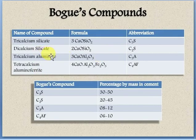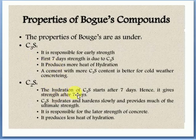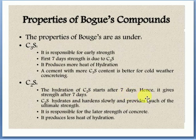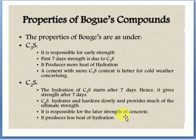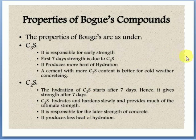C2S — Dicalcium Silicate: hydration of C2S starts after seven days. Hence it gives strength after seven days. C2S hydrates and hardens slowly and provides much of the ultimate strength. Very important: ultimate (later) strength comes from C2S. It is responsible for the later strength of concrete, and it produces less heat of hydration compared to C3S.